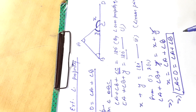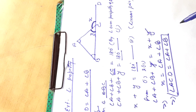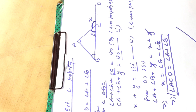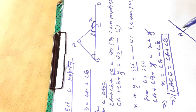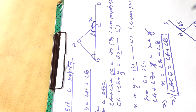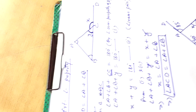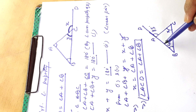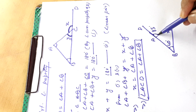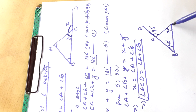Now we will use this property to solve some problems. Suppose a triangle is given. The side BA is produced to D, and this exterior angle is given as 85 degrees. Angle C is unknown, suppose it is x, and angle B is given as 40 degrees. We have to find the value of x.